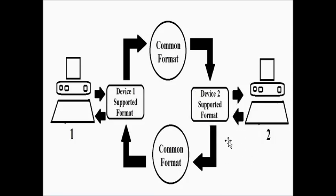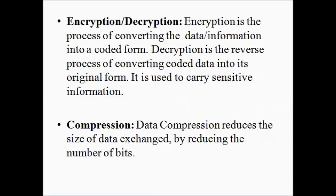When device 2 is transmitting, the presentation layer at device 2 converts the device-2-supported format into a common format. Again, the presentation layer at device 1 converts the common format into the device-1-supported format. So this is how the translation feature works.